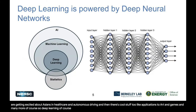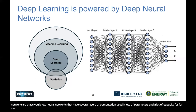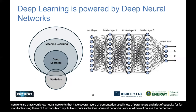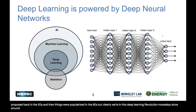Deep learning is this subset of machine learning and AI, basically powered by deep neural networks — neural networks that have several layers of computation, usually lots of parameters, with a lot of capacity for learning mappings from inputs to outputs. The idea of neural networks is not new; the perceptron was proposed back in the 50s, and things were popularized in the 80s. But clearly, we're in this deep learning revolution nowadays, since around 2012-2013.